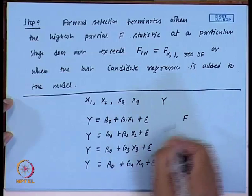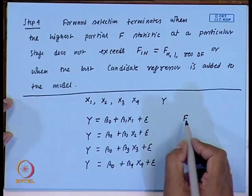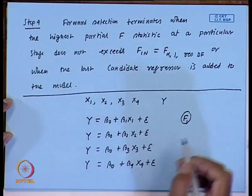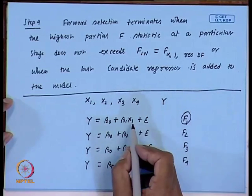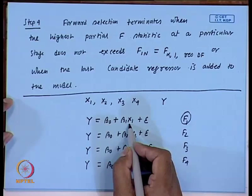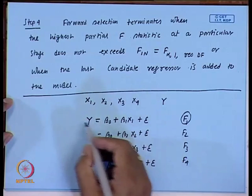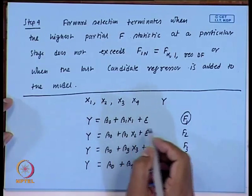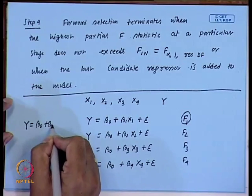I will compute the F statistic for each of these models. The model or regressor having the highest F — say F1 is associated with the first model, F2 with the second, F3, F4 — if F1 is highest, the associated regressor x1 is the most significant among the 4 regressors to explain the variability in y. Once x1 is selected, we keep x1 in the model and seek for the next best regressor.